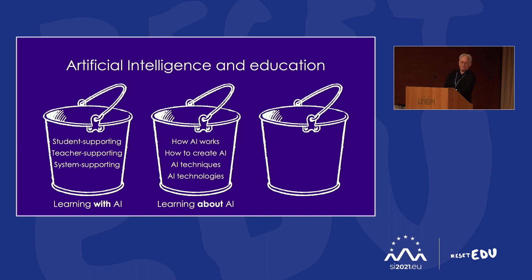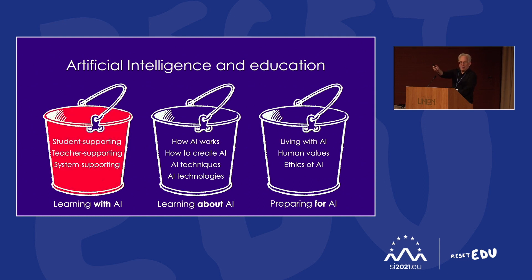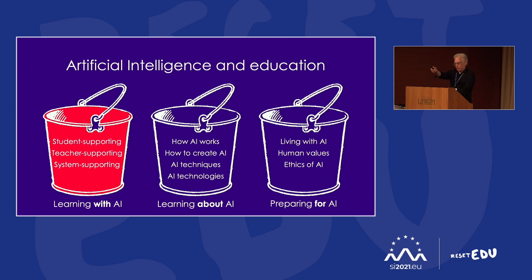My second bucket is learning about AI — how AI works, how to create it, the techniques and technologies — which we've heard about already this morning. My third bucket is preparing for AI. In my presentation I'm going to begin with learning with AI, which has three types: student supporting, teacher supporting, and system supporting.